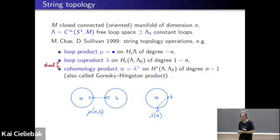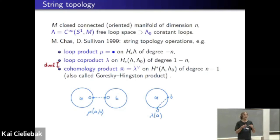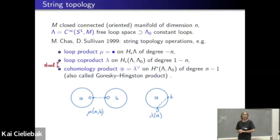You can define the coproduct on loop space homology dually. You take one chain of loops and consider the evaluation at time zero and at some other time t, which is allowed to vary freely. When those two coincide, the loop has a self-intersection, and you can decompose it into two loops: first from zero to t, then from t to one. That gives a coproduct of degree 1 − n, because we have this additional free parameter t. This is the loop coproduct, dual to a product on cohomology studied extensively by Goresky and Hingston, also known as the Goresky–Hingston product.